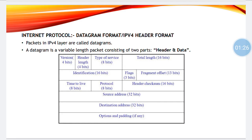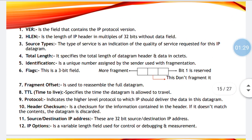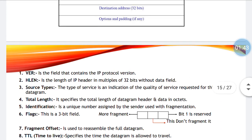Then we have flags. Flags is a 3-bit field. The first bit indicates whether more fragments are present or not. The second bit indicates 'don't fragment' — no sort of fragmentation is further required. And the last bit is reserved.